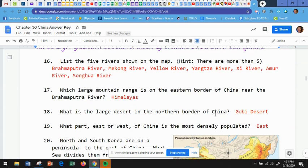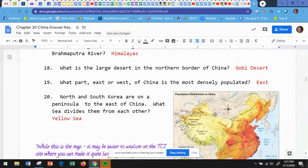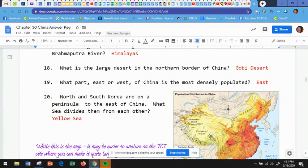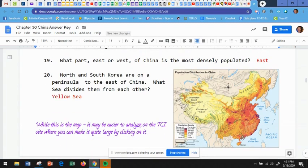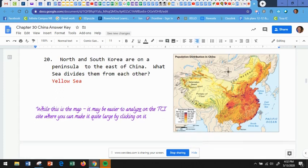Well, that large mountain range, you have to look way down here and you can see that it's called the Himalayas, spread all the way out. What's the large desert in the northern border of China? Again, spread out, that is the Gobi Desert. And which part the east or the west of China is the most densely populated? That would be this portion over here and this would be the eastern portion.